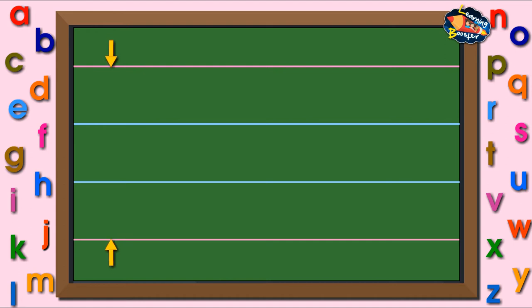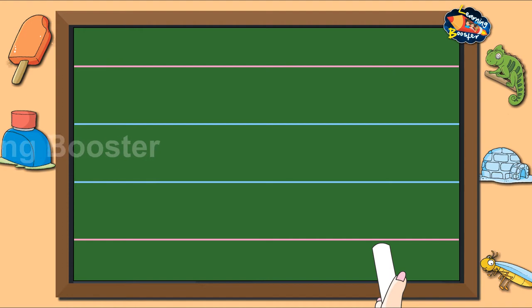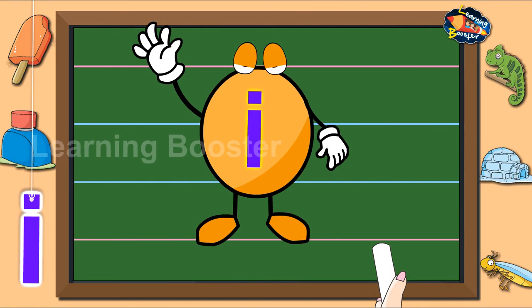Look at the two red and two blue lines. Each has a name. Tall line, base line, base line and tail line. In this video, we will learn to write small letter i.